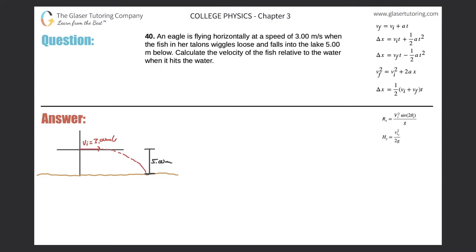Number 40: an eagle is flying horizontally at a speed of three meters per second when the fish in her talons wiggles loose and falls into the lake five meters below. Calculate the velocity of the fish relative to the water when it hits the water. So here's a picture - initially the eagle is flying at three meters per second horizontally, then drops the fish, which takes a trajectory downward and falls a total y-displacement of five meters.